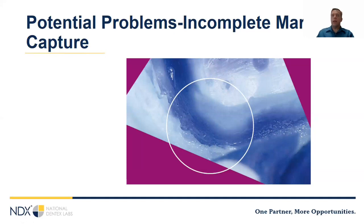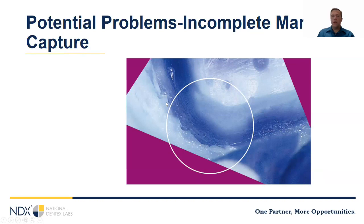Regarding margin problems: if you have good detail but everything looks ragged, you've had good adaptation to the tooth but not accurate extension all the way down to the margin. This can be caused by insufficient retraction, fluid contamination at the margin, impression material not reaching down into the sulcus, or tearing. Most of the time when we see this, we'll have to retake the impression and correct whatever was going on.